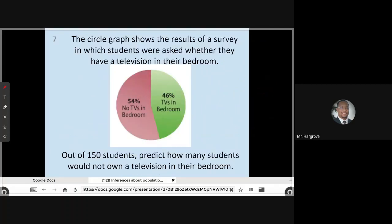All right, let's move to our final example. It has another circle graph. And it says the circle graph shows the results of a survey in which students were asked whether they have a television in their bedroom. Out of 150 students, predict how many students would not own a television in their bedroom. And that's critical: would not. Anytime you're solving a problem and it says not, make sure you bring attention to that word so that you don't accidentally solve the problem incorrectly. But it has percents in the problem. So you guessed it. We're going to use the percent bar.